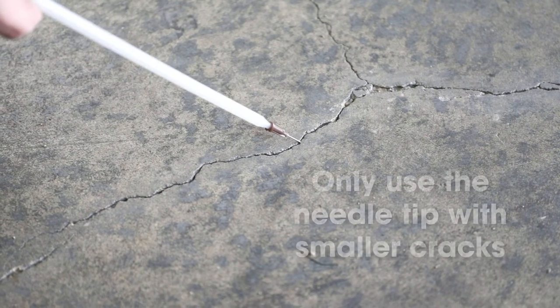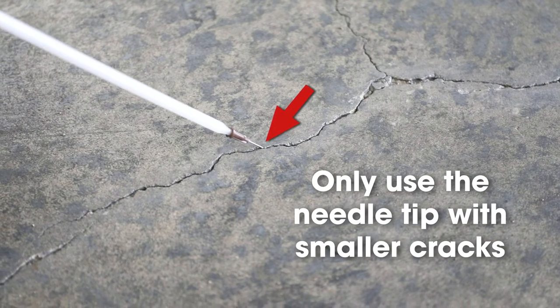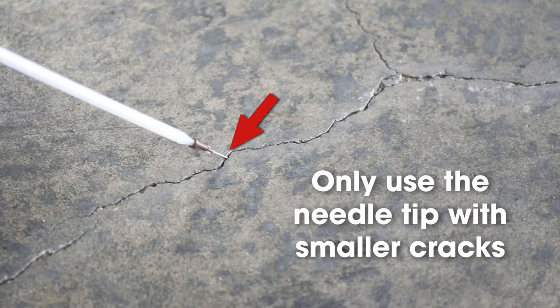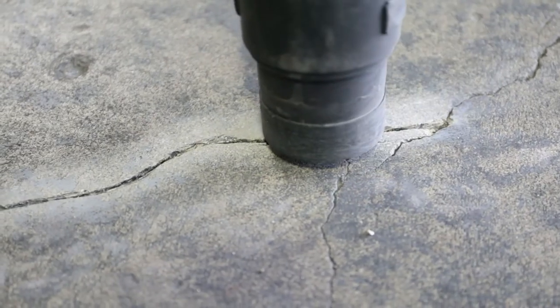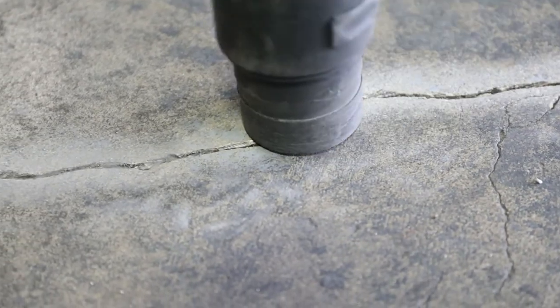Only use the needle tip with smaller cracks as it will slow the flow of material, which will cause the 555 to begin curing more quickly within the mixer. After you've chased the crack, vacuum it again to remove any loose debris.